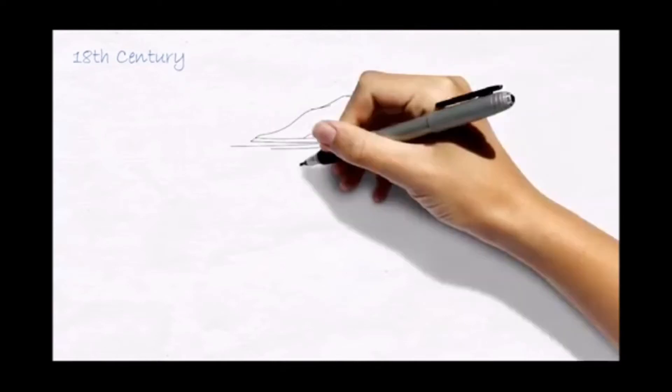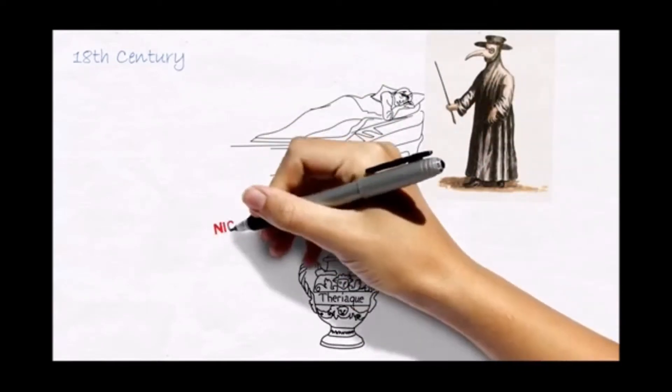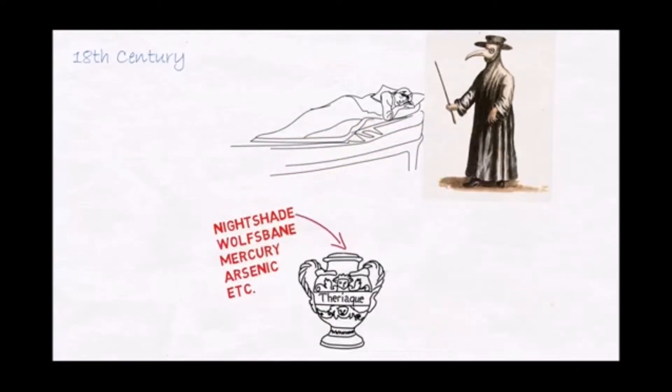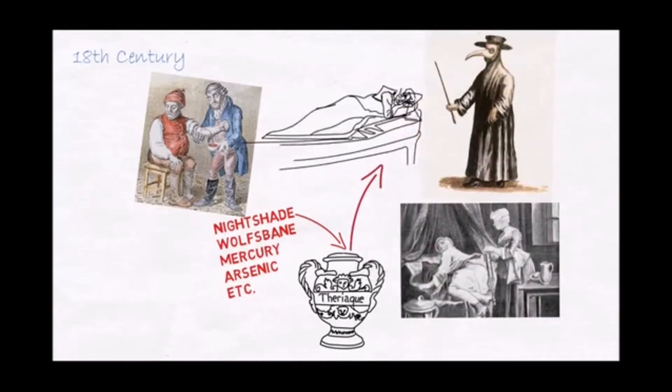Until the end of the 18th century, European physicians used dangerous drugs, very often mixed together, to treat their patients. Bleeding and purging methods were also used, often with devastating consequences.